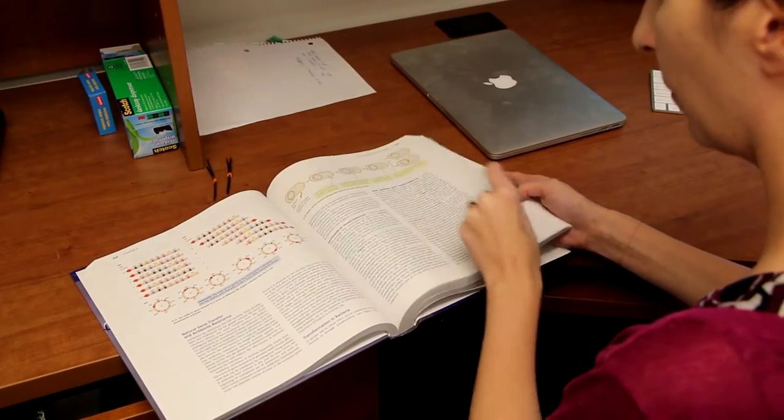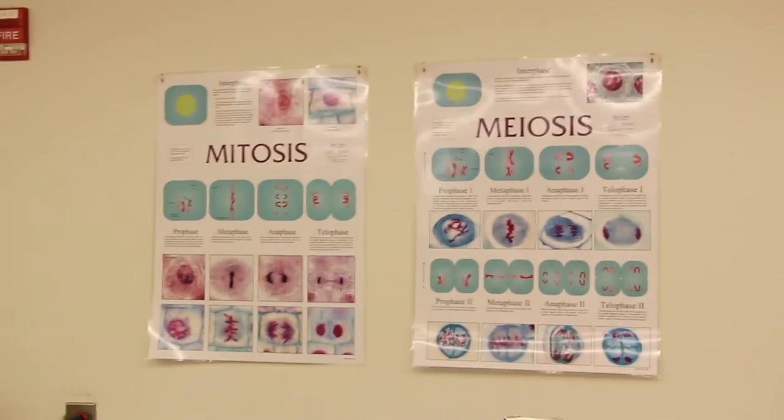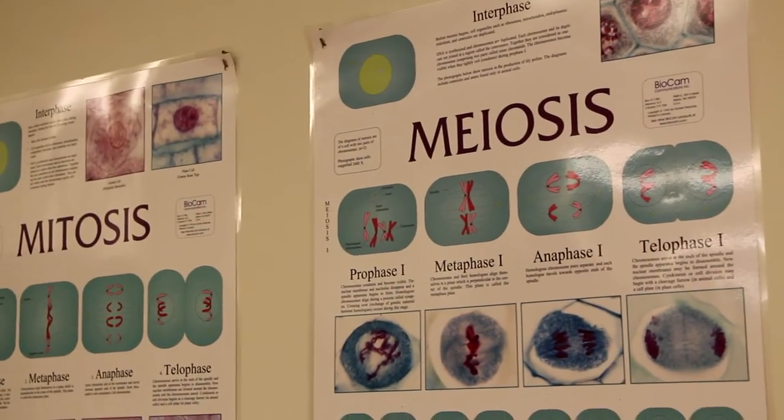As we're wrapping up our studies about how yeast uses this self-eating process while it's mating, what I'm interested in starting to look at going forward is how other types of yeast, so not your baker's yeast that you have at home to cook with, but yeast that can infect humans, how those yeasts also use cellular self-eating to survive while they're infecting you. So whether this process helps to make the yeast more pathogenic.